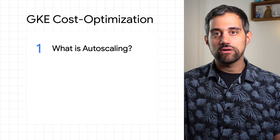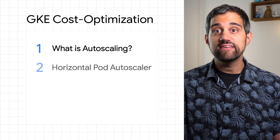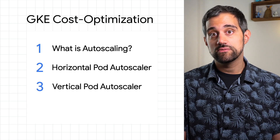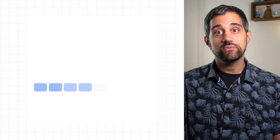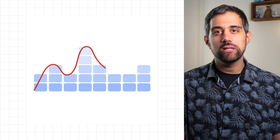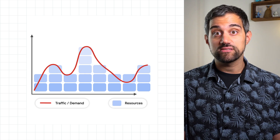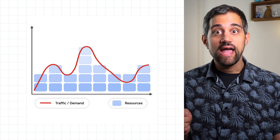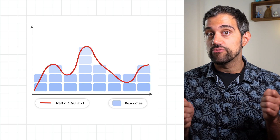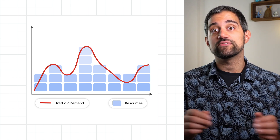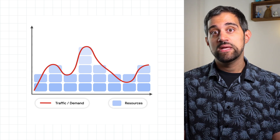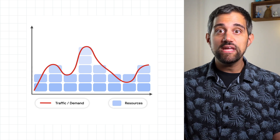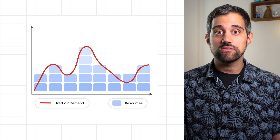I'll start with an introduction to auto-scaling, and then dive deep into horizontal and vertical auto-scaling for your workloads. Starting with the basics, auto-scaling is really all about two things: getting additional resources when demand increases, and shutting down or removing resources when demand decreases. By setting auto-scaling up efficiently and specific to your workload, you'll be able to minimize wasted cost.